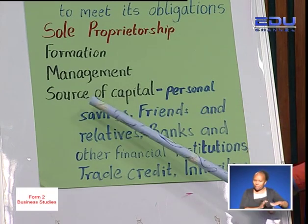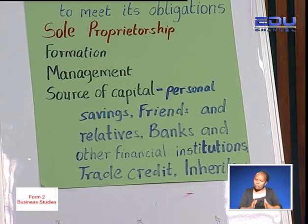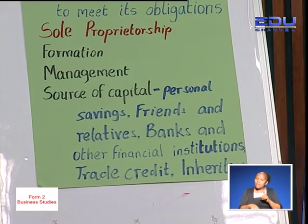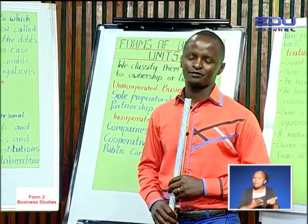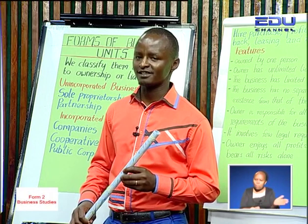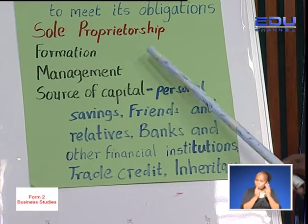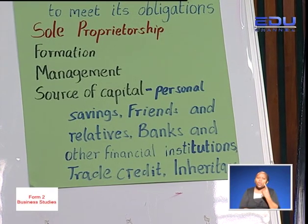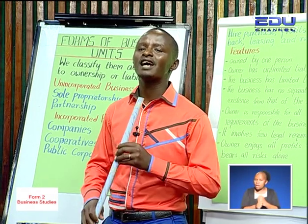The next case, I want us to look at the sources of capital for a sole proprietorship form of business unit. When a person comes up with an idea, identifies a business opportunity, in entrepreneurship, this person goes ahead and mobilizes resources to start and run a business. So this form of business unit, which is owned by one person, is going to mobilize resources. One of the key resources that a business requires for it to start and operate is what we call capital.